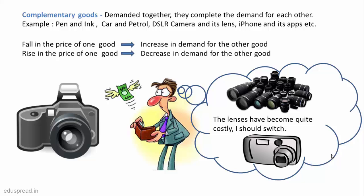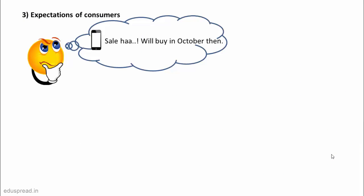Another important factor that may cause quantity demanded to change at all price levels is the expectations of consumers. If consumers expect the price of a good to be lower in the future, they will decrease demand in the current period in anticipation of getting the good at a cheaper rate later. For example, if there is going to be a sale in October with up to 70% discount on e-commerce platforms, then sales of these products will go down in September.